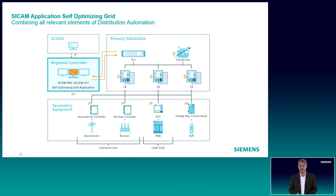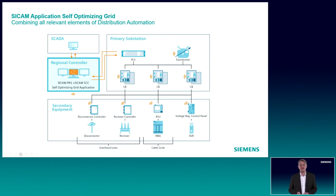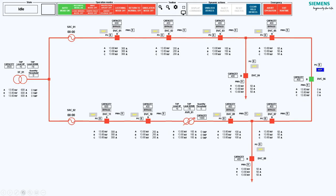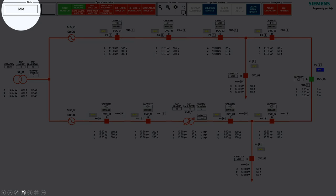Here you see the architecture of the self-optimizing grid, positioned between field devices and secondary stations, at the primary substation level and below the SCADA level. It connects all relevant data from the different levels and integrates the application. You also see the HMI of the SICAM SCC. The application shows a simple ring configuration with a transformer on the left-hand side, two infeed stations, and a simple ring. On the top bar is the operational panel showing the different functions which can be enabled, disabled, or monitored. In idle state, all relevant data are processed in the SICAM PAS, which takes a monitoring view of the total grid.